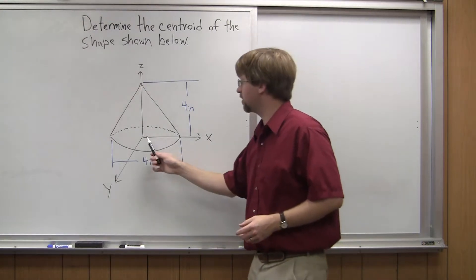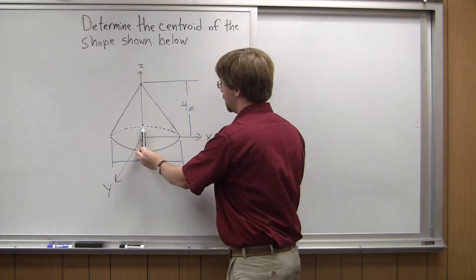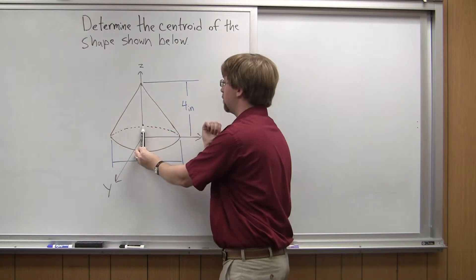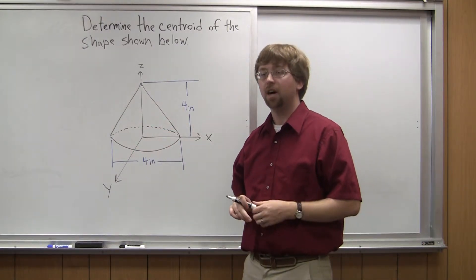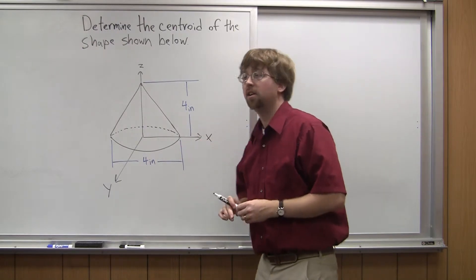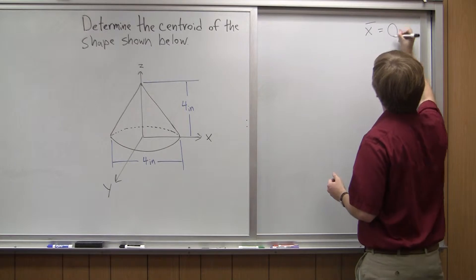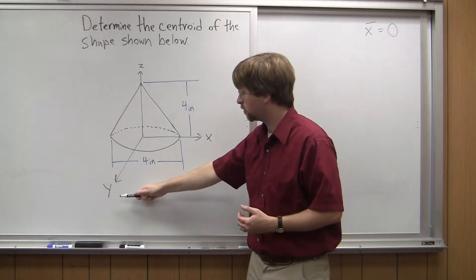If I look at the x-direction, if I've got something that's symmetrical, so I think about the left half of this cone and the right half, they're a mirror image of one another. So once a mirror image like that, I can go ahead and say x-bar is equal to zero. So the x-centroid is going to be equal to zero, or x-coordinate of the centroid.